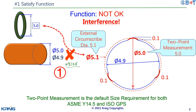This point-to-point measurement is called two-point measurement. According to ISO GPS, two-point measurement is the default requirement for size specifications. So two-point measurement is okay by the spec — but from a functional point of view, the external circumscribed diameter is what matters. Since the external diameter is 5.1 and the o-ring is 5.0, there is interference — the function is not okay.